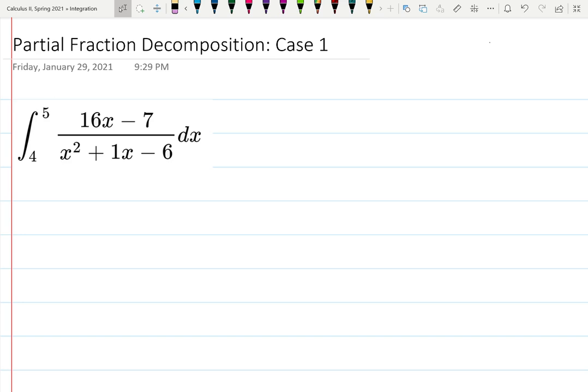Partial fraction decomposition case 1. How do I know that this will be case 1? Well, I see that we're working with a fraction. The degree of the polynomial in the numerator is lower than the degree in the polynomial of the denominator, so I can try to factor the denominator as much as possible.